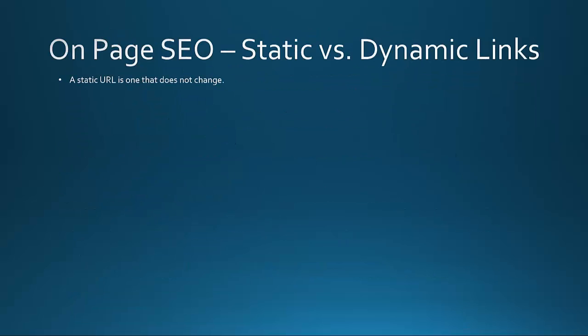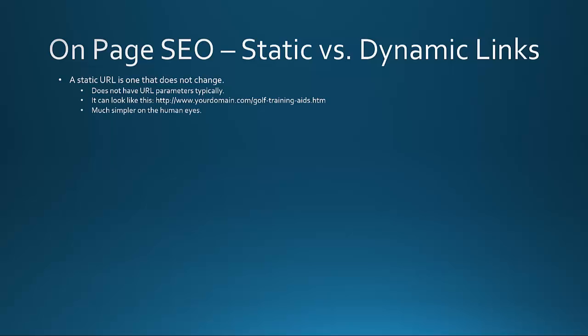Static vs. dynamic links. A static URL is one that does not change — it does not have URL parameters typically tied into it, meaning it's more of a solid link. It can typically look something like this: yourdomain.com/golf-training-aids.htm. That's what a static link is. It's much simpler on the human eyes, much easier for people to look at and understand, and can lead to a higher click-through rate from search engine results.